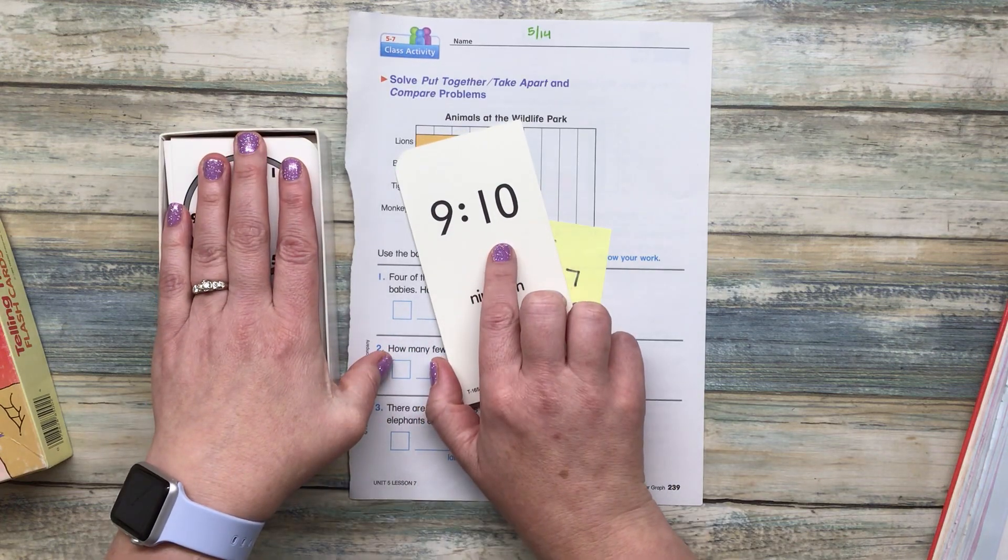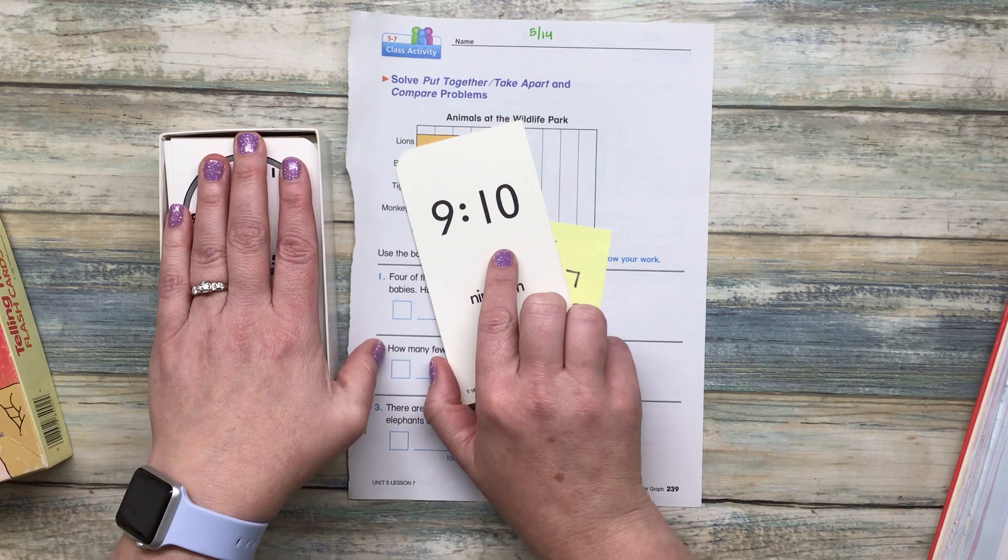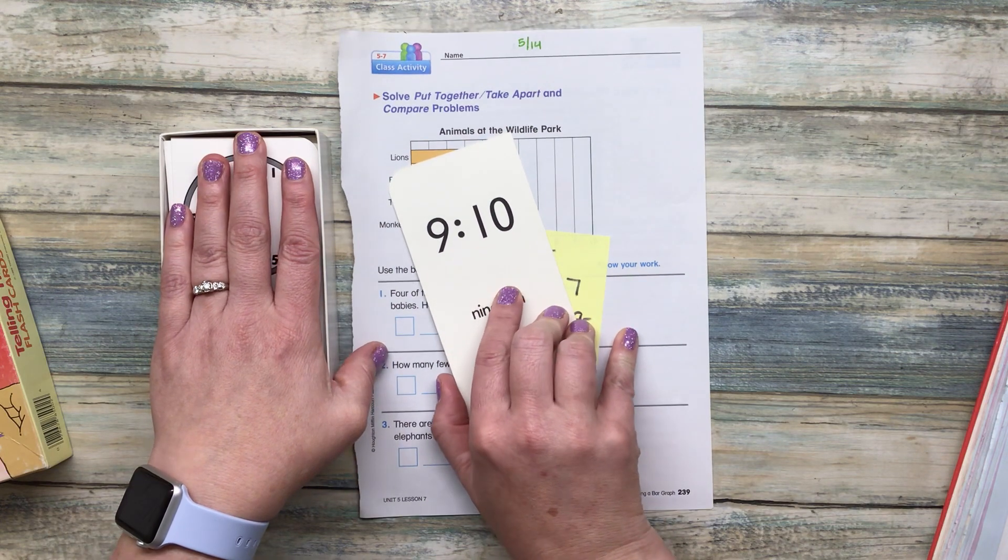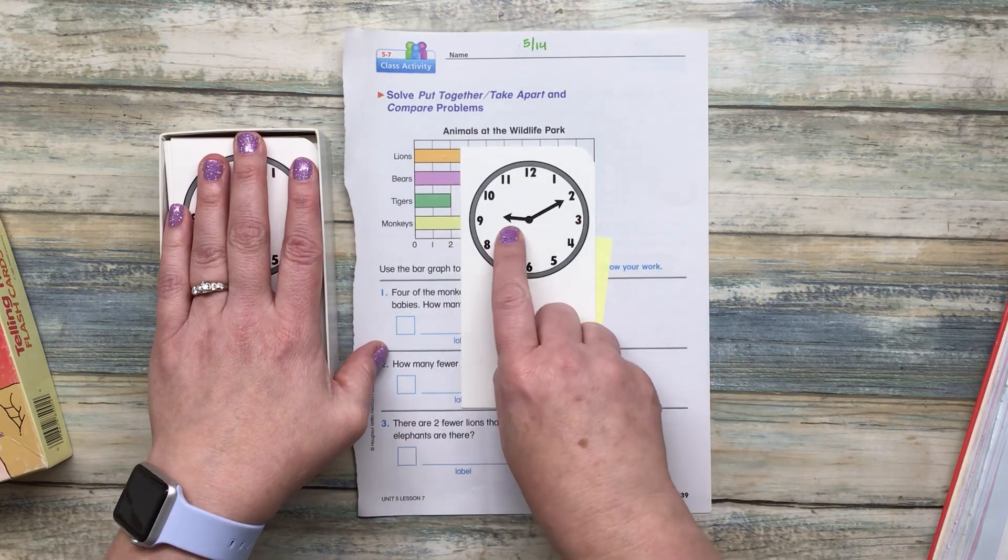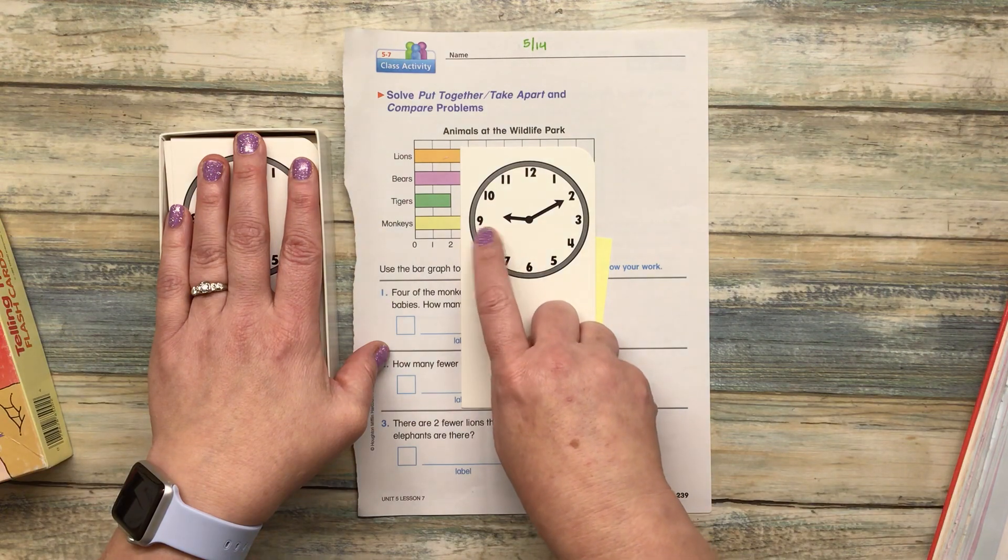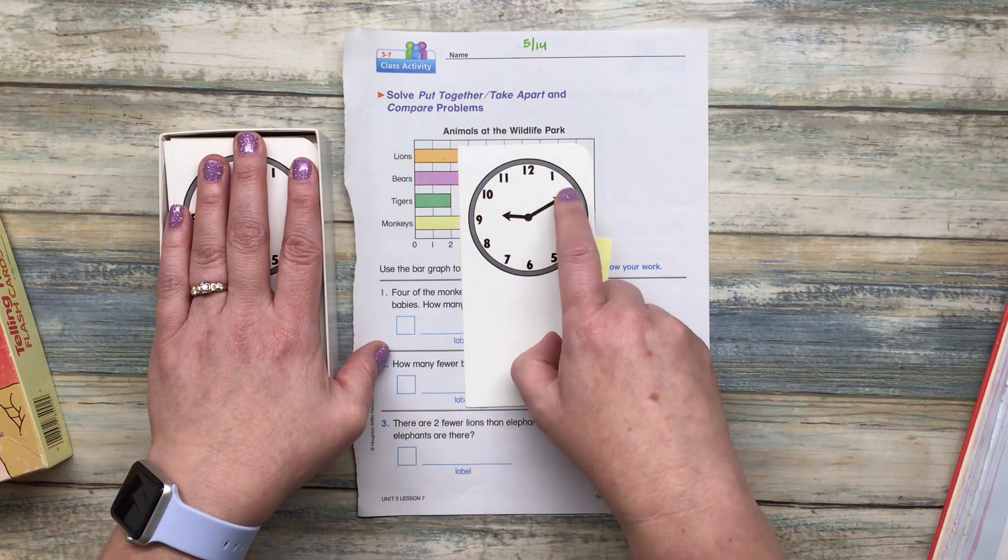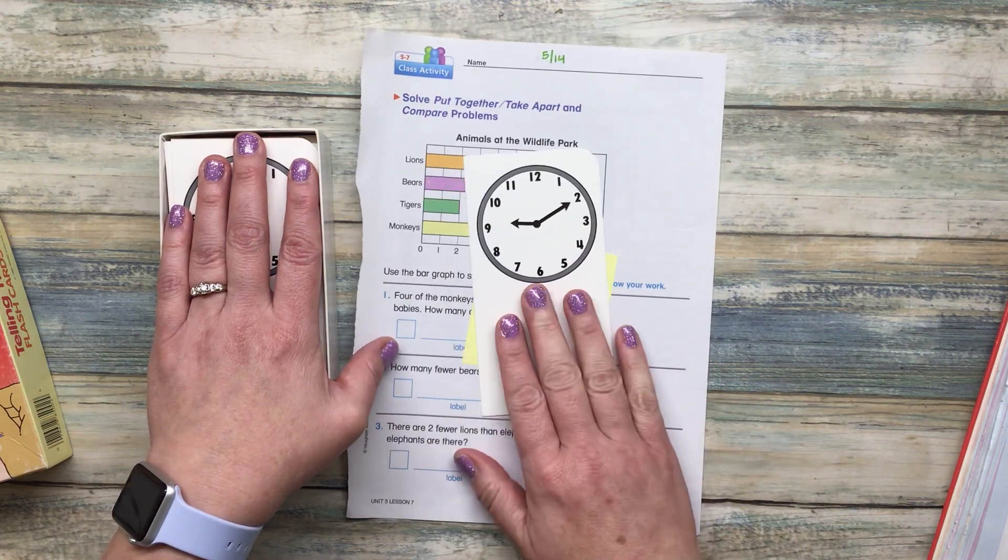So that just happened a few minutes ago when we were in class working on extra math. So we know that our hand is pointed just right after the 9. And if we count by 5s up to that 2, we get to 10.